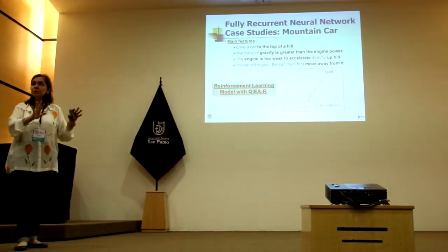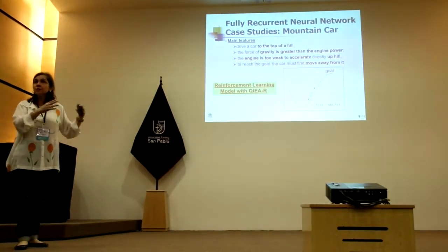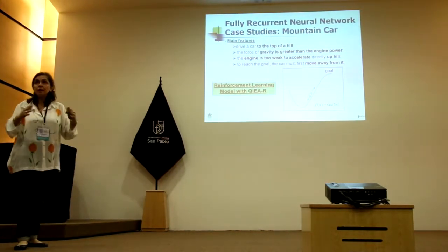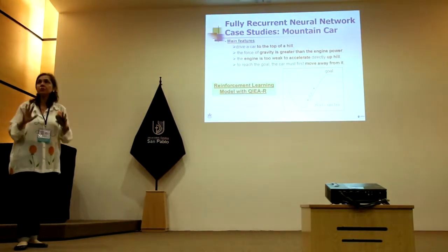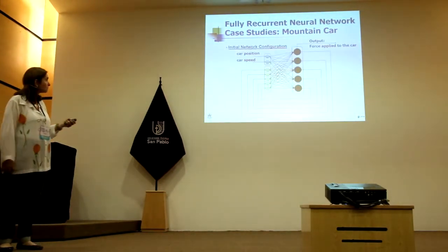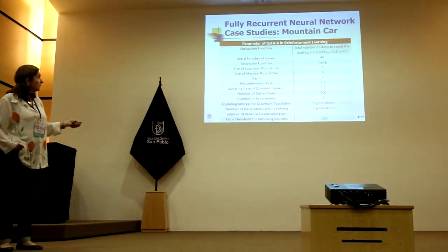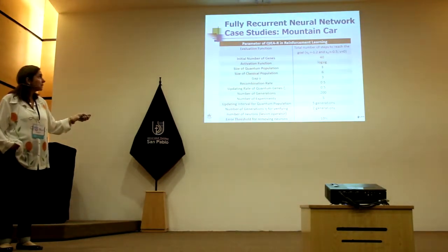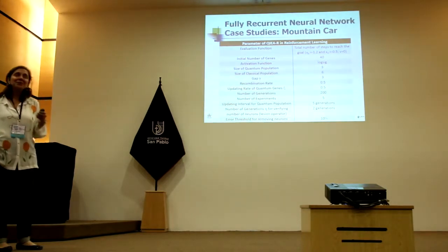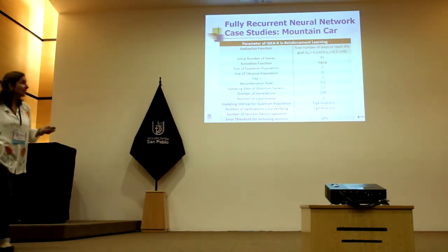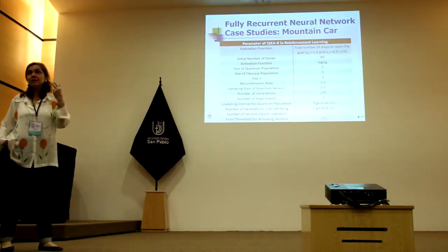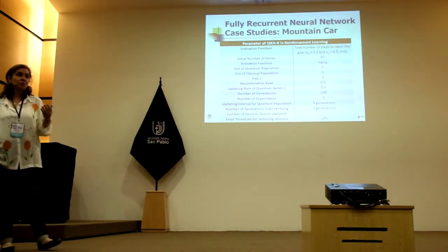We just work from two initial positions. The system has to learn, and then the car has learned by itself — from any initial position it has to do the right thing. In this case it was even smaller: the size of the population was just three chromosomes, and each chromosome generated two classical chromosomes.